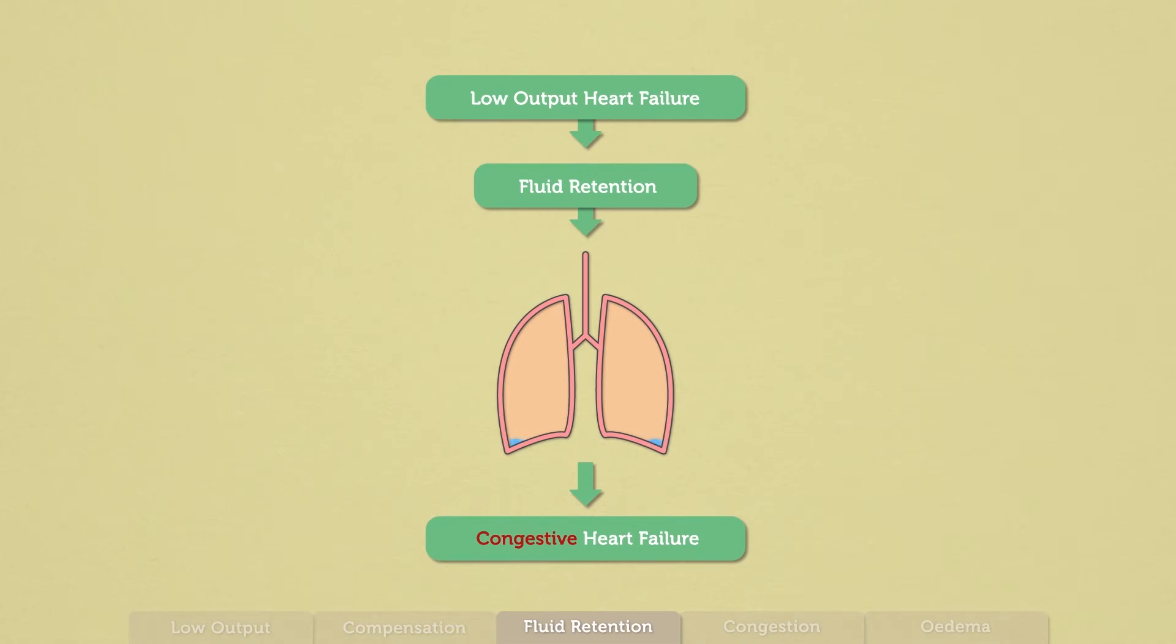By contrast, when the left side of the heart is damaged, fluid retention leads to fluid in the lungs. When low output heart failure leads to fluid retention in the lungs, it is called congestive heart failure. So the congestion in congestive heart failure is the reason that I have trouble breathing. There is fluid retention in my lungs. What exactly is congestion?